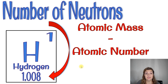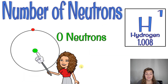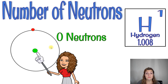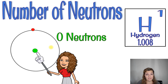So we end up with 0 neutrons. Looking back at our atom model, we have 1 proton, 1 electron, and 0 neutrons in our nucleus. I know that sounds weird, but it can happen — you don't technically need a neutron to be an atom, you just need a proton.